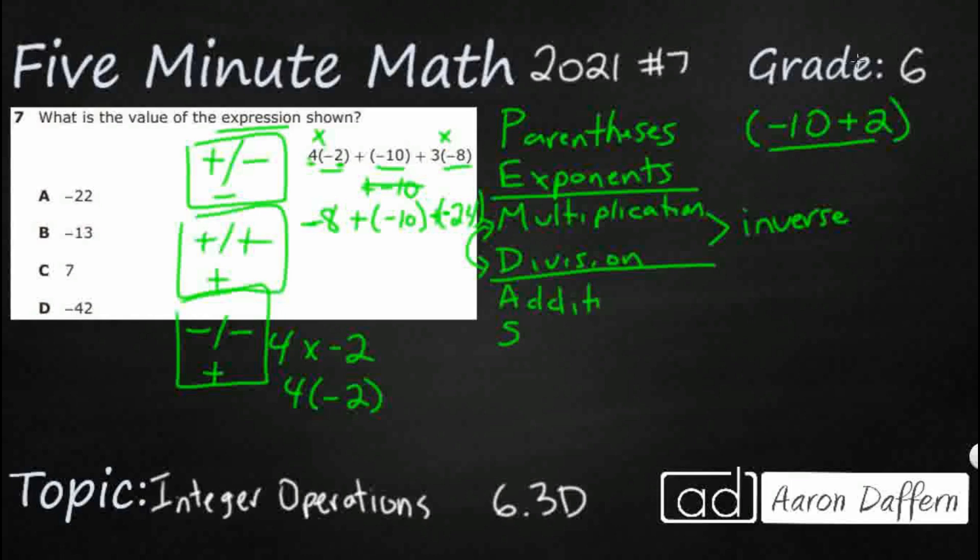We've got negative eight plus negative 10 plus negative 24. So we have addition and subtraction. And once again, you could do either of those first because they are inverse operations as well. And so let's see what we have. We have a plus negative 10. Well, when we have these two together, a plus negative is the same as a minus. So I've got minus eight minus 10. And I've got another plus negative minus 24.